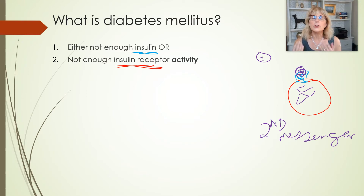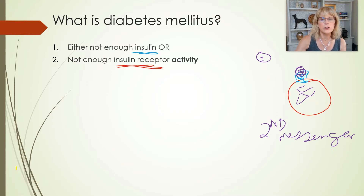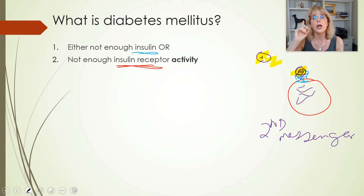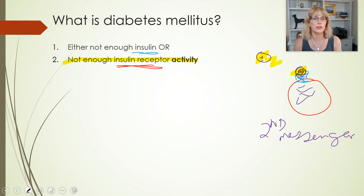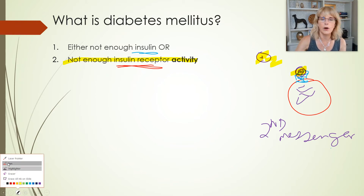There are two ways for this system to go wrong. One way would be if there is not enough insulin — the cell's not going to get the message. But the other way things go wrong is there is plenty of insulin, but something's wrong with that receptor.